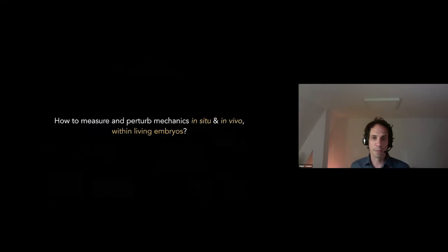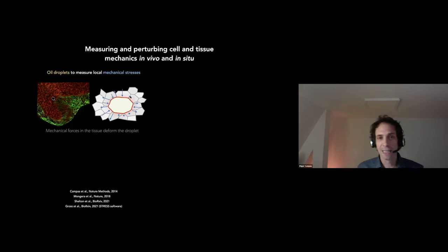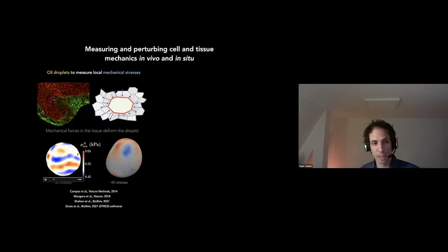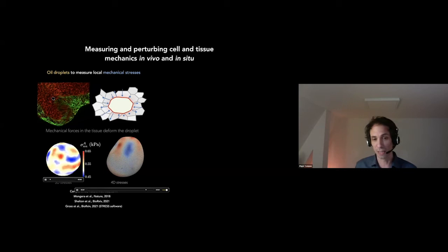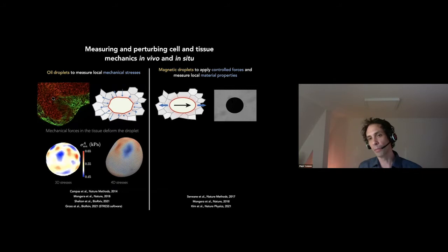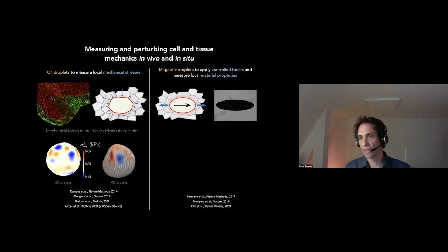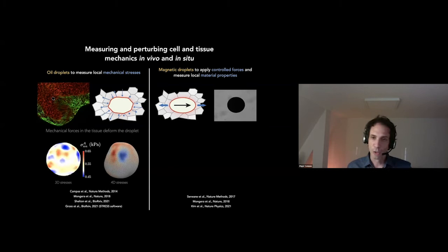So how do we measure and perturb mechanics in situ and in vivo? My group has been working on that for about 10 years. One technique we use to measure endogenous forces — the forces cells generate inside embryos — is this microdroplet technique: we put an oil droplet between cells in the tissue. The cells apply forces to this droplet and deform it. We can track the deformations in 3D or even 4D, and because we have calibration of these droplets, we can measure stresses as a function of space and time inside the embryo.